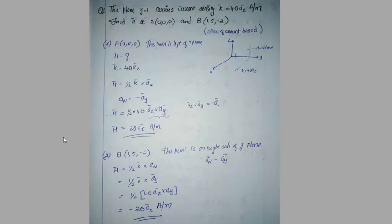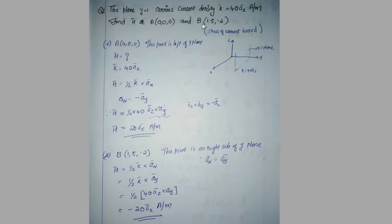The first question is: the plane y equal to 1 carries current density K equal to 40az amps per meter. Find the Magnetic Field Intensity at point A with coordinates (0,0,0) and point B at (1,5,-2).